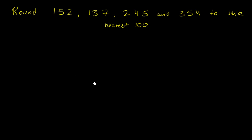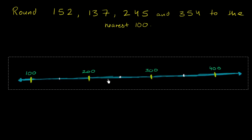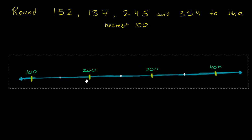So let's draw a number line here. I'm counting up by hundreds. What I've marked here — 100, 200, 300, 400 — these are all multiples of 100. I could keep going up: 500, 600, and so on and so forth.